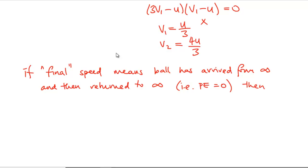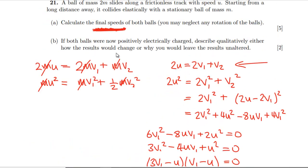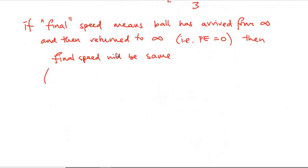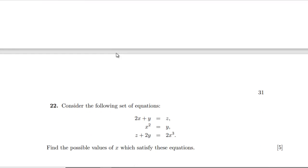Since potential energy is zero at infinity, the final speeds will be the same — the results are unaltered. In between, the potential energy from the repulsive charges does reduce kinetic energy, slowing both balls before impact. But that potential energy is fully converted back to kinetic energy as the balls separate back to infinity, so the final speeds are unchanged.